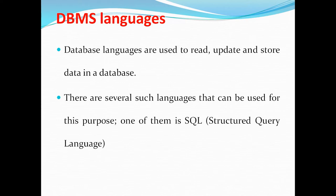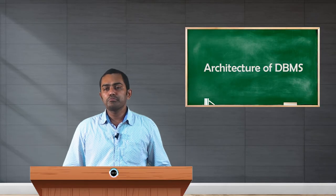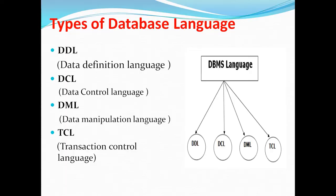We have different types of languages in a DBMS, and these are categorized into four types. First, DDL; second, DCL; third, DML; fourth, TCL. DDL stands for Data Definition Language, DCL for Data Control Language, DML for Data Manipulation Language, and the last one is Transaction Control Language.